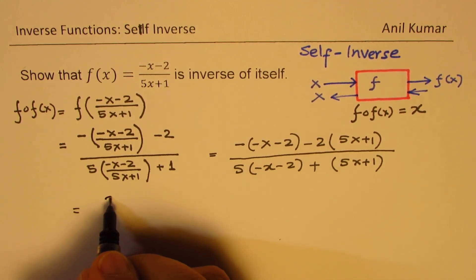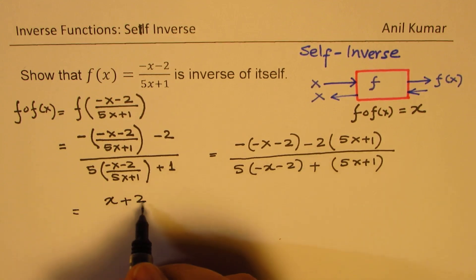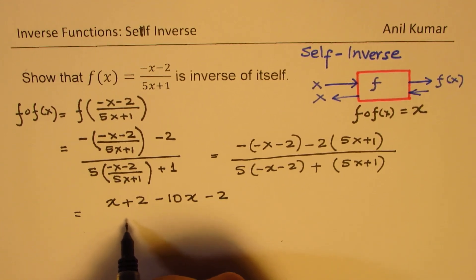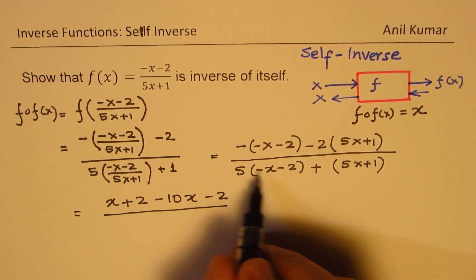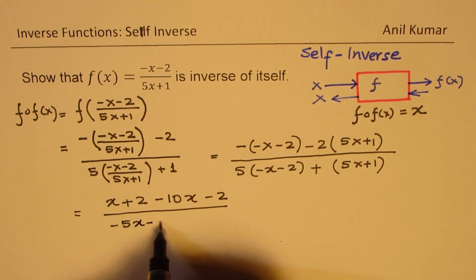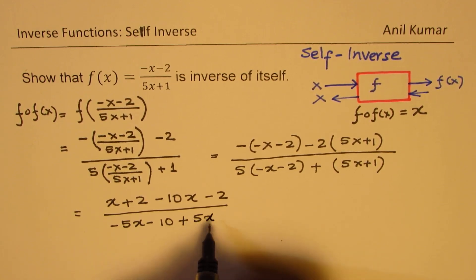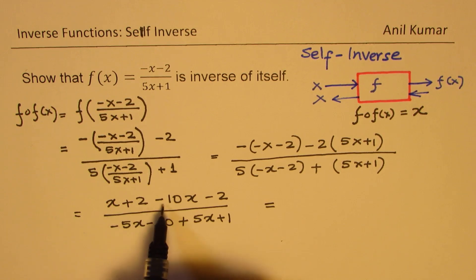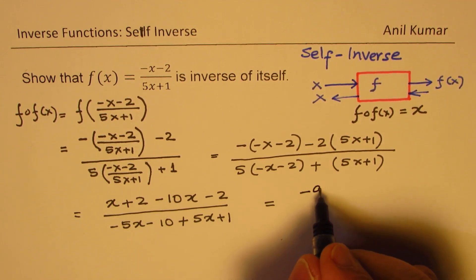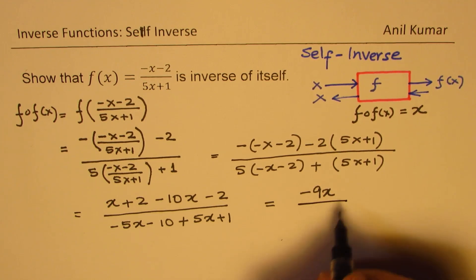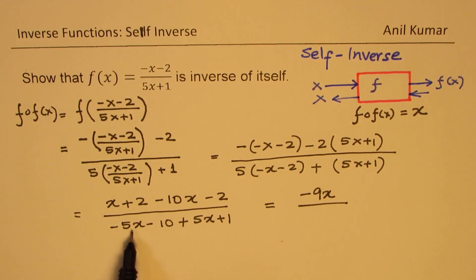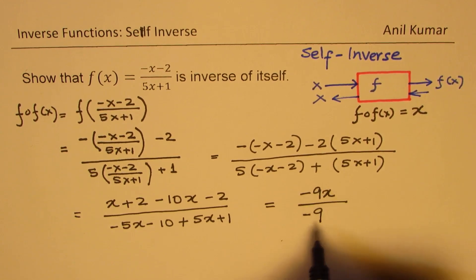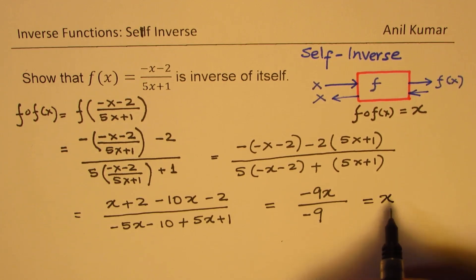Now, let's simplify this. So we have minus minus, we will change the signs. We have x plus 2 here in the numerator. That gives us minus 10x. And this gives us minus 2 over, let's multiply. So we have minus 5x minus 10 plus 5x and that is plus 1. So x minus 10x is minus 9x for us. 2 minus 2 is 0. In the denominator, we get minus 5x plus 5x is 0. Minus 10 plus 1 is minus 9. And 9 and minus 9 cancel and we get x.